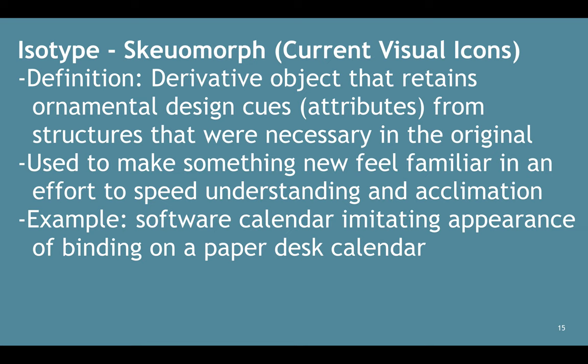In terms of today's current visual icons, they take on a thing called skeuomorphism — a great word. Skeuomorphism is basically defined as derivative objects that retain ornamental design cues or attributes from structures that were necessary in the original. They're mainly used to make something new feel familiar, in an effort to speed understanding and acclimation. For example, if you have a desktop computer or iPhone with a calendar app — that's a software calendar — what they'll do is have the icon look like the analog version of it, like a paper desk calendar, so people recognize what that icon means.